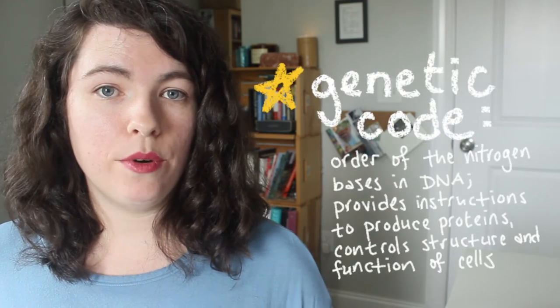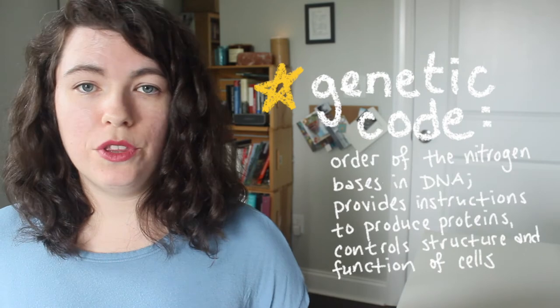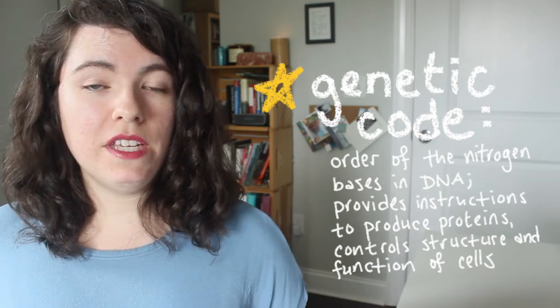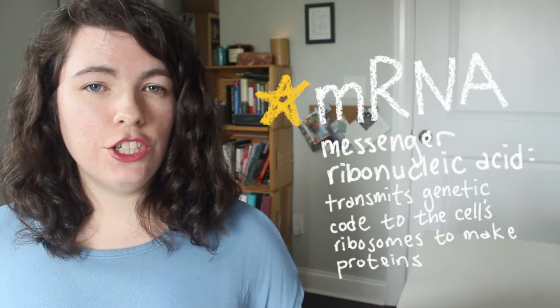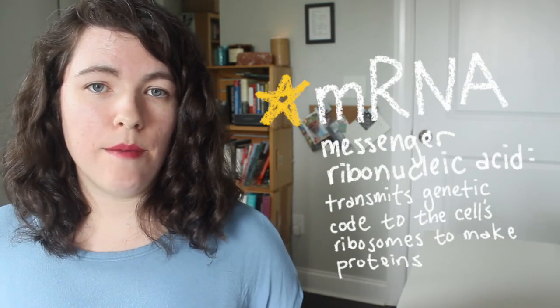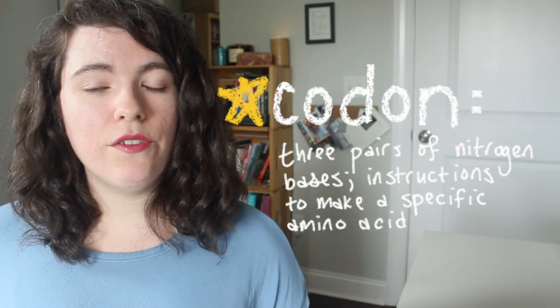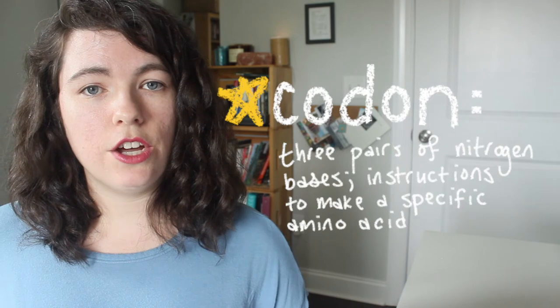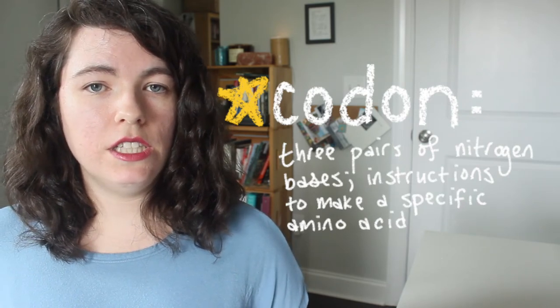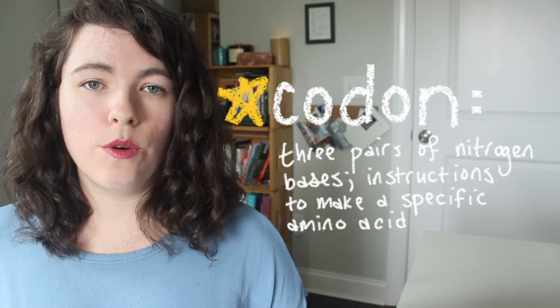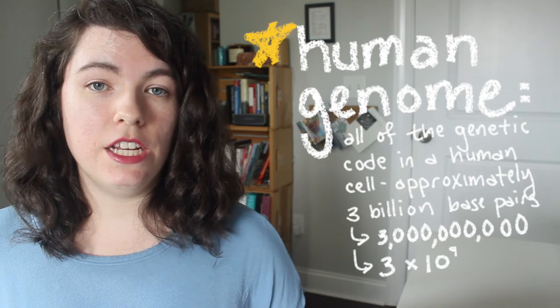The order of these base pairs contains instructions that the cell uses to make proteins, which controls both the structure and function of the cell. This order is called the genetic code. Messenger ribonucleic acid, known as mRNA, transmits this code to the cell's ribosomes to make proteins. Each set of three base pairs is called a codon, and each codon is the instruction to form a specific amino acid — a building block for protein. The human genome consists of approximately 3 billion base pairs of DNA across 23 chromosomes.